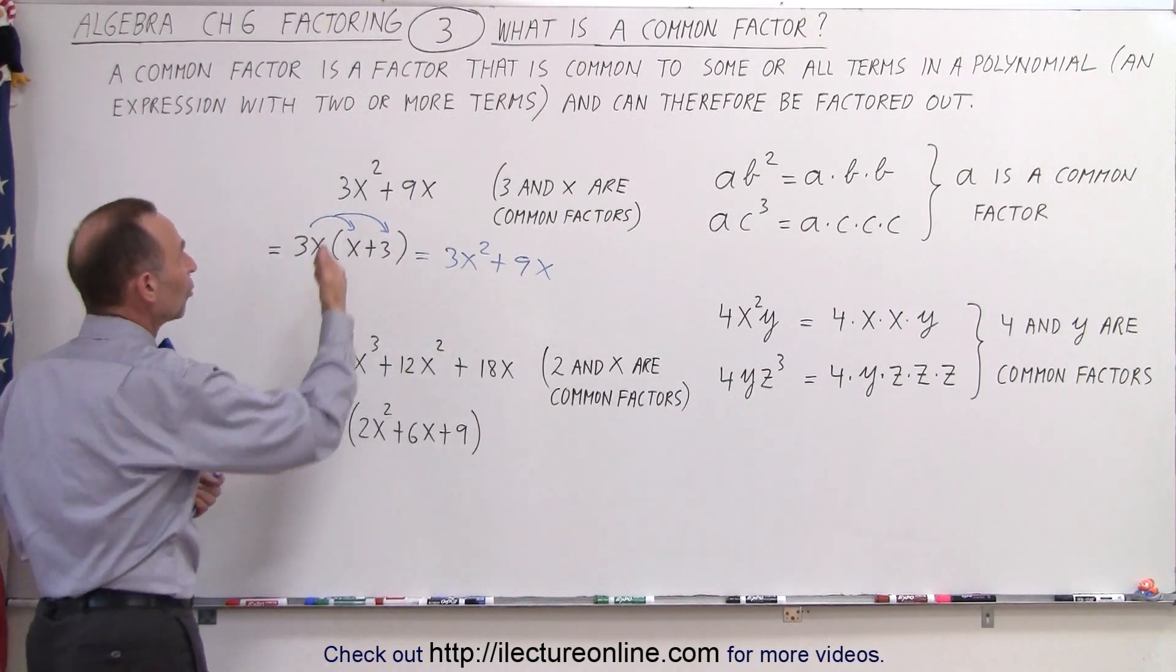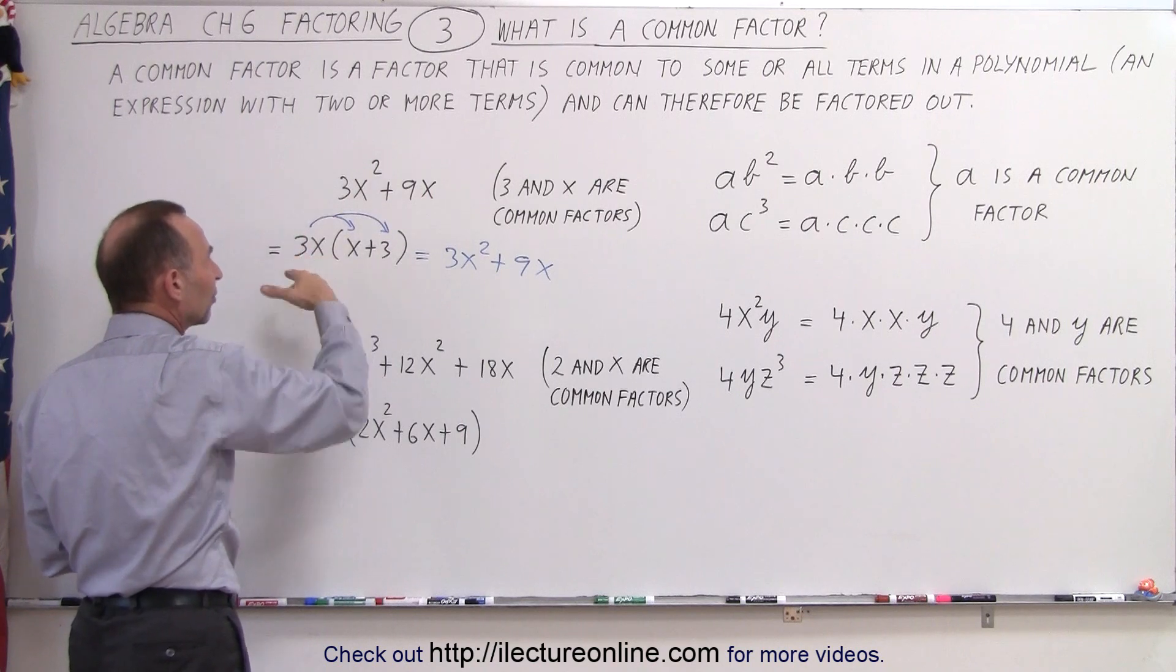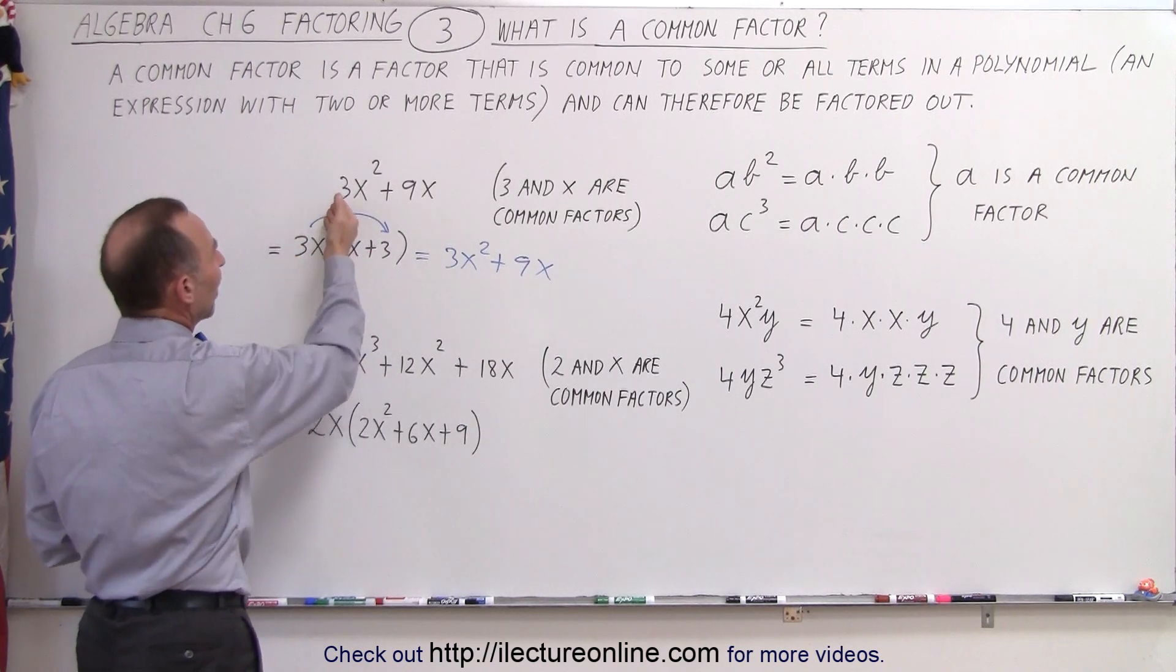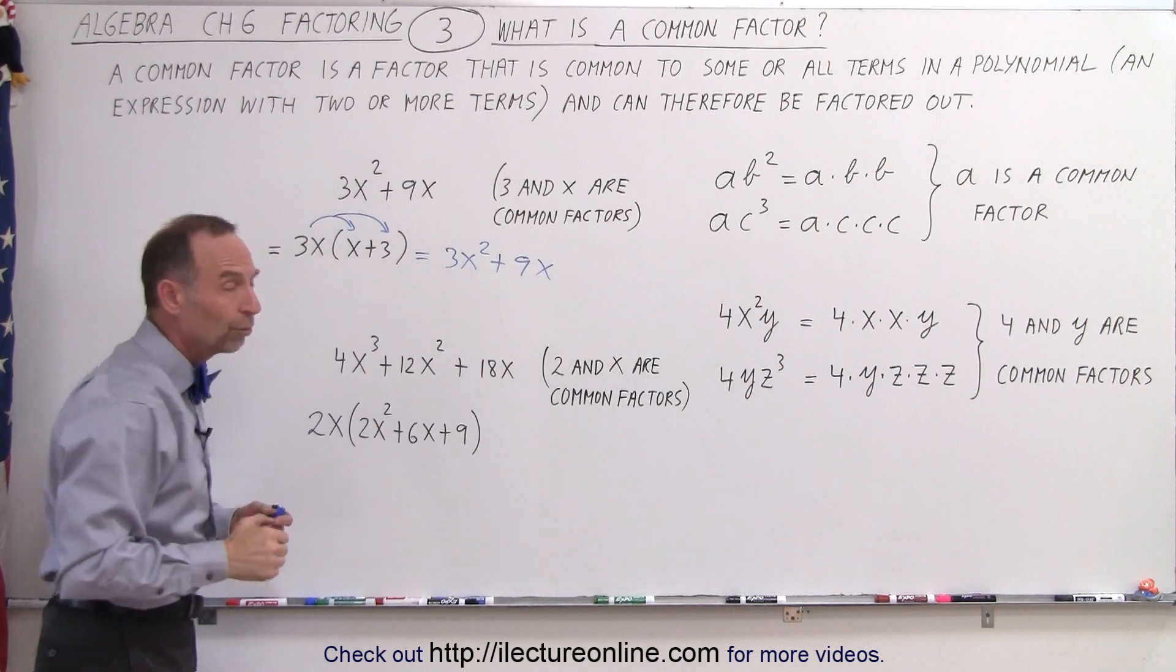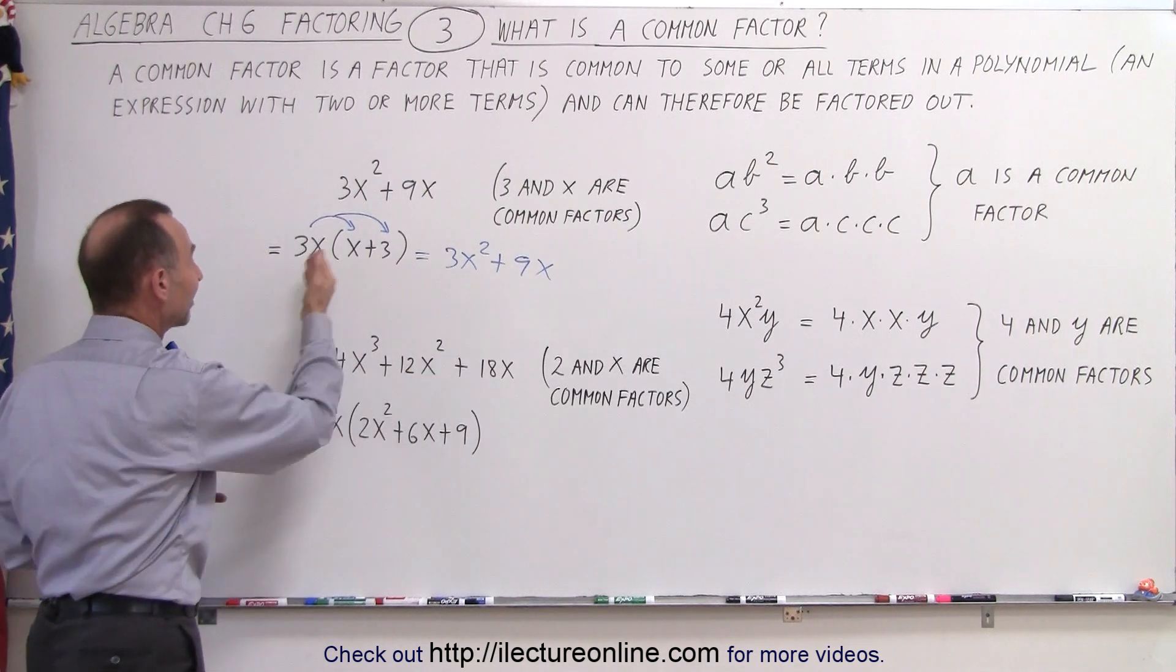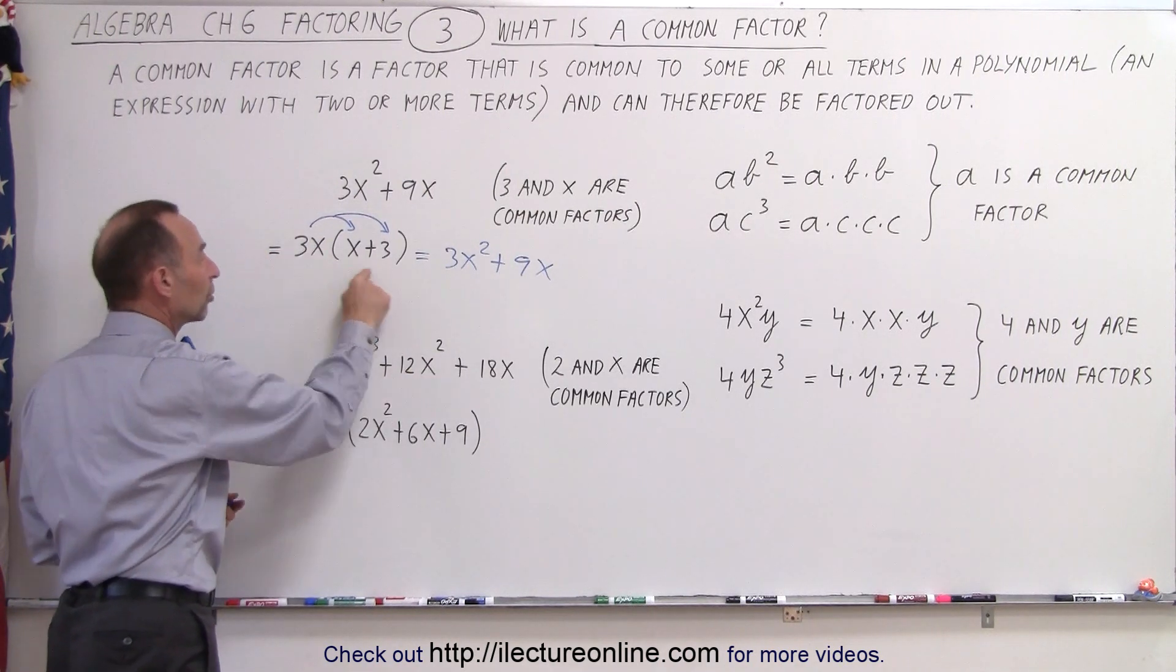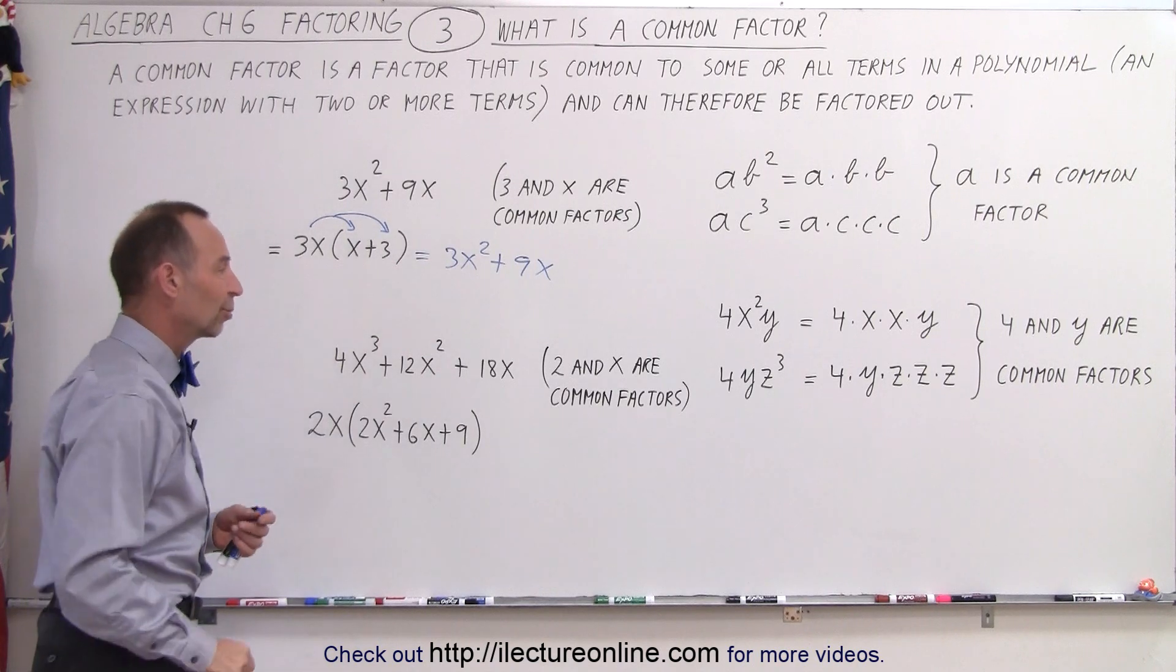What we did here is factor out the common factors 3 and x, then multiply back in to get the original equation. It's basically the distributive property backwards, or dividing both terms by 3x. When we multiply them back in, we get the original expression.